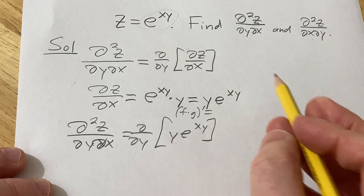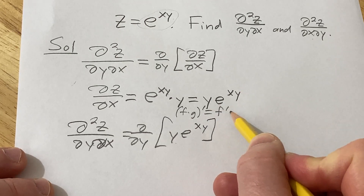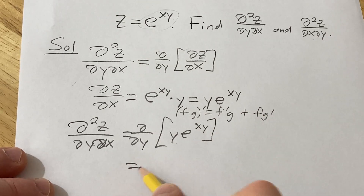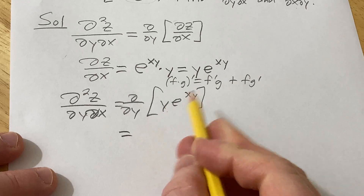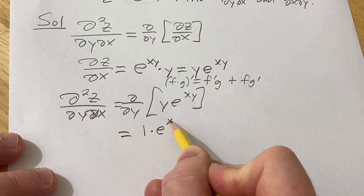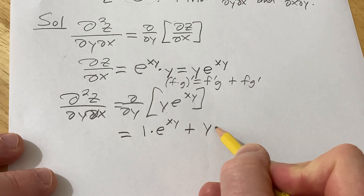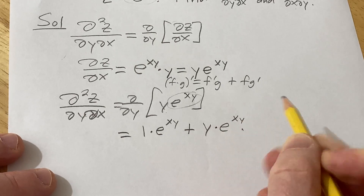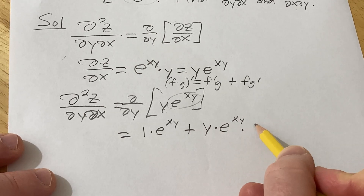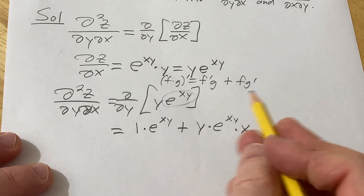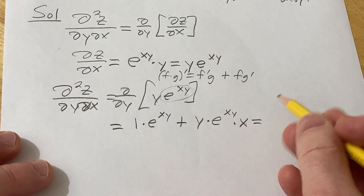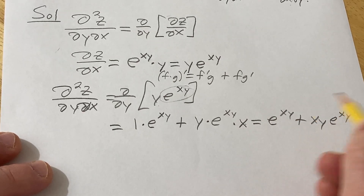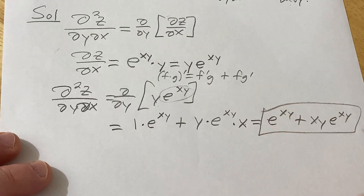It's the derivative of the first times the second, plus the first times the derivative of the second. So here the derivative with respect to y of y is 1, times the second, plus the first times the derivative of e to the xy with respect to y via the chain rule, which gives x, because the derivative of y is 1. So this ends up being e to the xy plus xy·e to the xy. You could factor out e to the xy, but I'm just going to leave it like that.